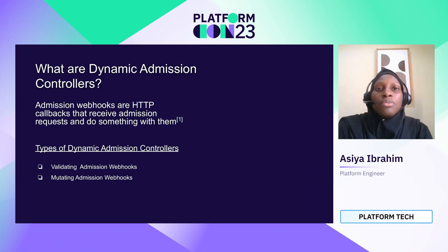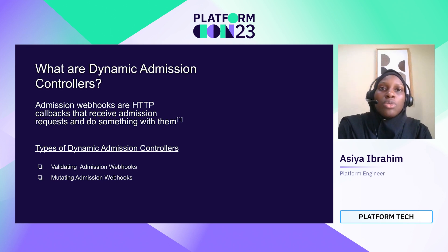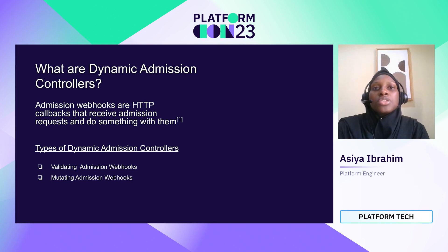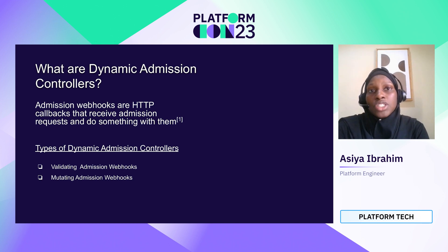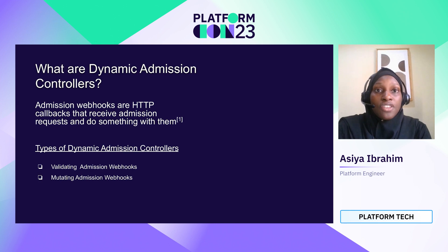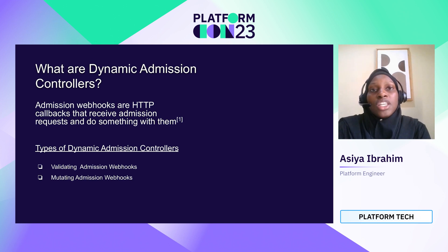It's either going to be validated — in the sense that the controller or webhook will check if that resource is allowed to be created on the cluster, if it meets a specific standard — or it's a mutating controller that changes your resource, maybe deleting or adding a label before it's created. A simple example would be a validating webhook that says for every deployment coming into the production cluster, ensure that it has the label 'environment: production'. If that label is missing, it will deny the resource from being created.